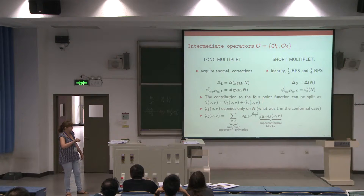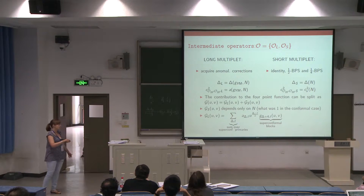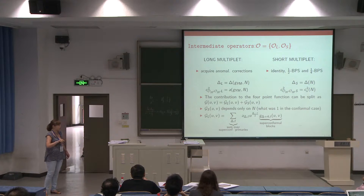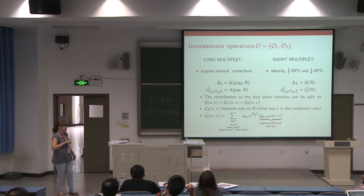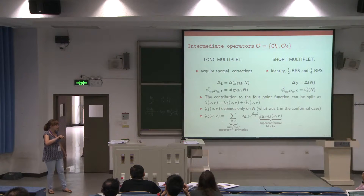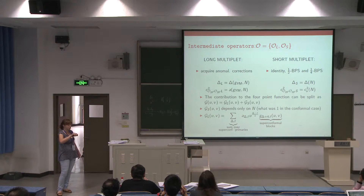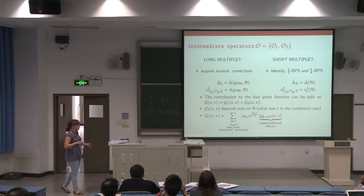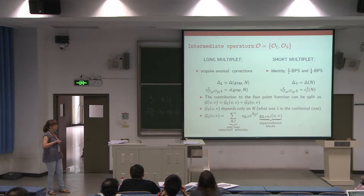We can split the contribution of the four-point function into two parts: the contribution of operators belonging to long multiplets, and the contribution of operators belonging to short multiplets. The short multiplet contribution is fixed, and can be computed completely. For the long operators, I can decompose this four-point function into superconformal blocks, where superconformal blocks repack the contribution of the superconformal primary and all its descendants. This is just the three-point function squared.